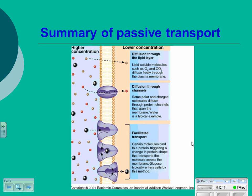Summary of passive transport: you have diffusion across the lipid layer, diffusion through channels which is facilitated diffusion, and facilitated transport which is more like a lock-and-key situation — still from high concentration to low concentration, but with a change in the shape of the protein gateway, whereas with channels there's no change in the gateway.